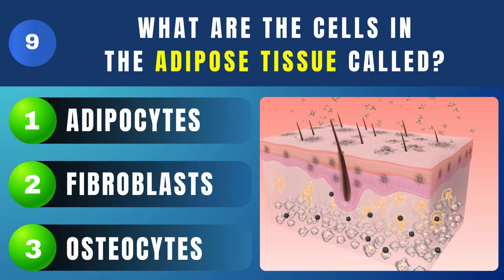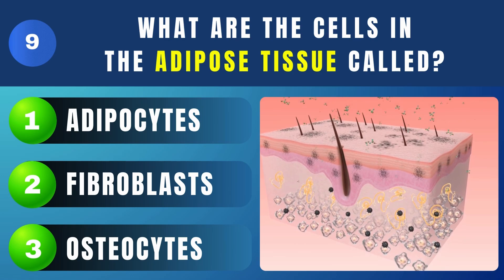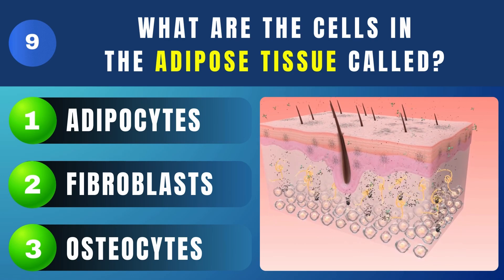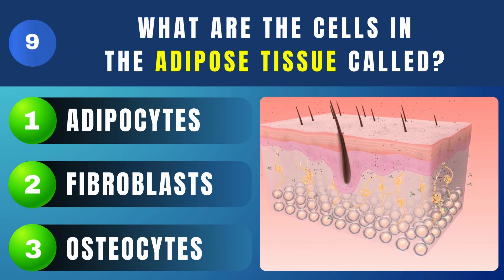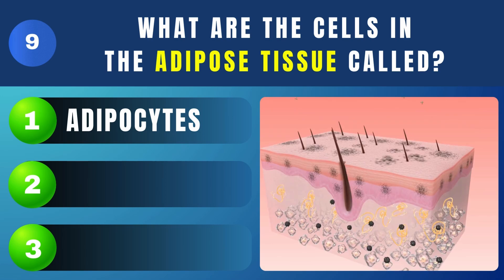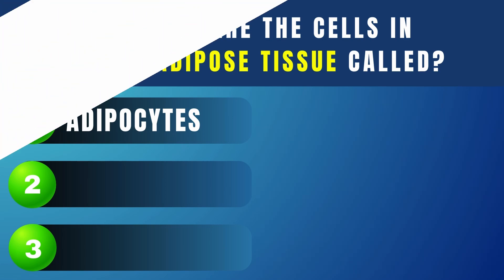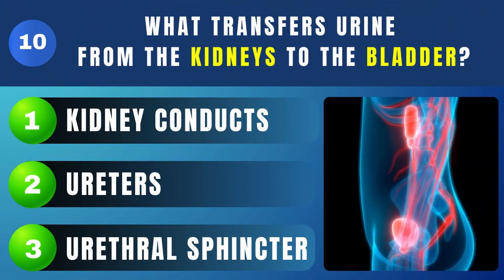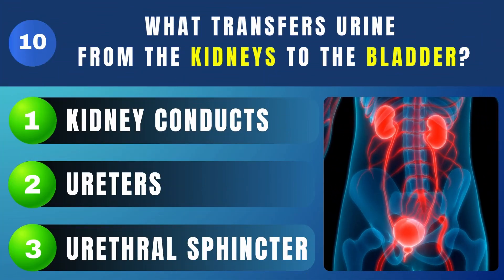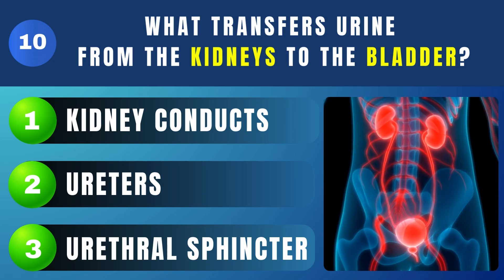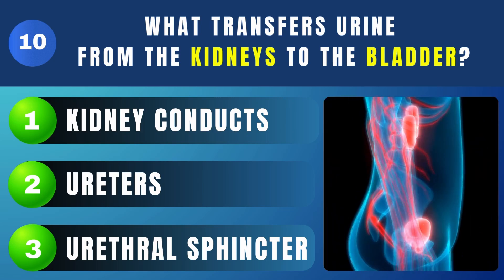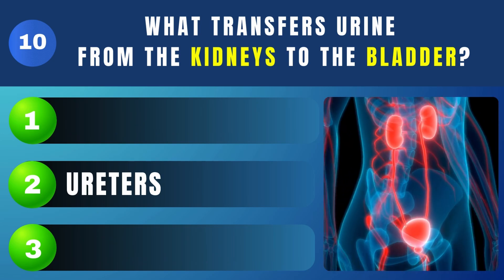What are the cells in the adipose tissue called? Adipocytes. What transfers urine from the kidneys to the bladder? Ureters.